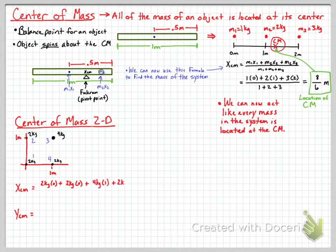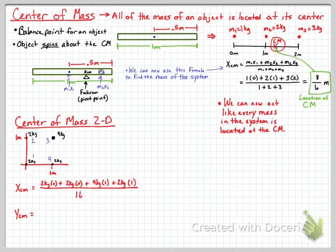We separate it into the center of mass position in the x direction and in the y direction. For the x direction: 2 kg times 0 (object 1), plus 2 kg times 0 (object 2), plus 4 kg times 1 meter, plus 2 kg times 1 meter, all divided by the total effective mass of 10 kilograms. Two plus two plus two plus four equals 10.